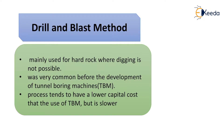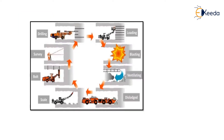The first method is the drill and blast method. It is mainly used for hard rock where digging is not possible. This was very common before the development of the TBM, that is the tunnel boring machine. This drill and blast method tends to have a lower capital cost than the use of TBM, but this method is slower.